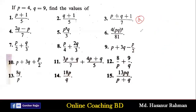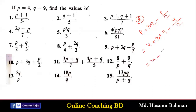Number 9 says p + 3q − p/2. The value of p is 4, the value of q is 9. So 4 plus 3 multiplied by 9 minus 4 divided by 2. 3×9 is 27, and 4 divided by 2 is 2. So 4 plus 27 is 31, minus 2 equals 29. That is the solution of number 9.